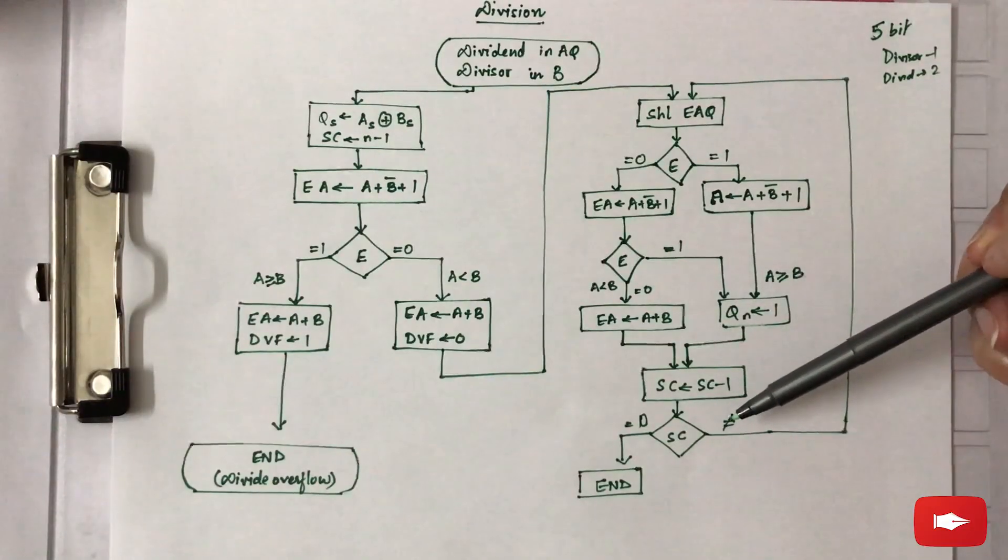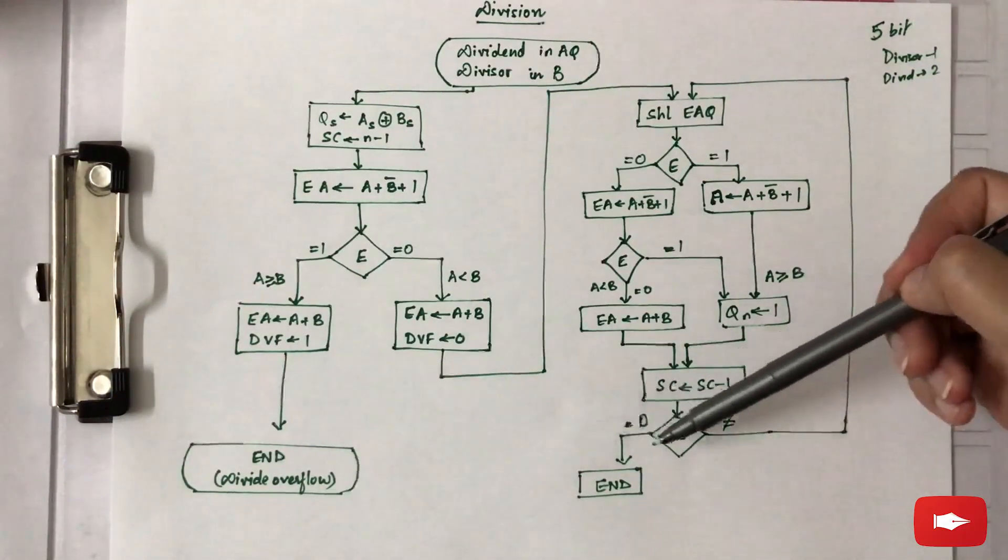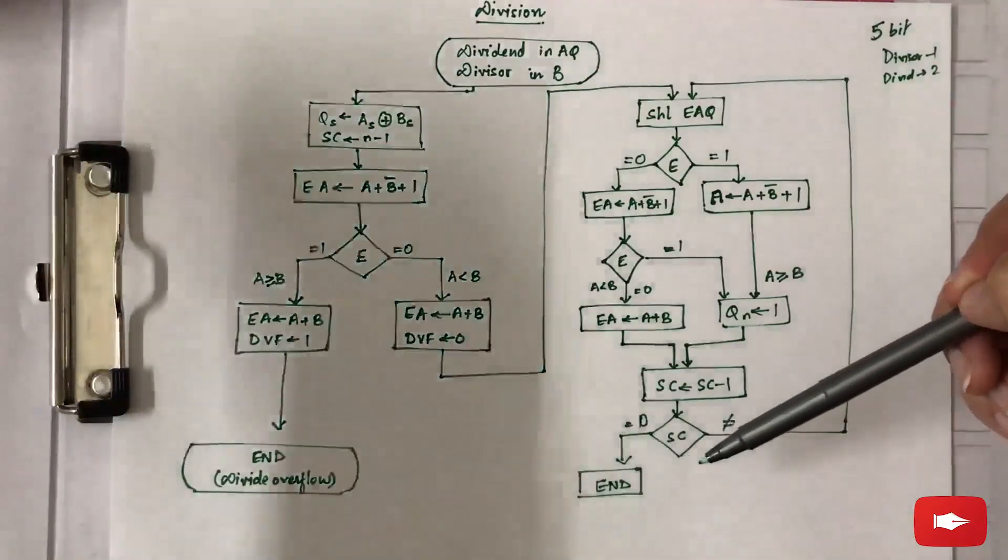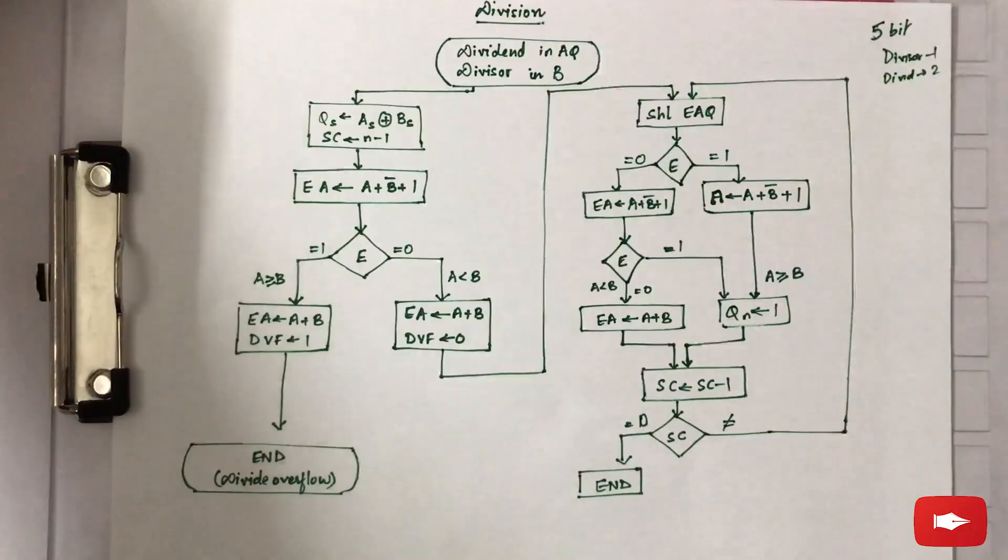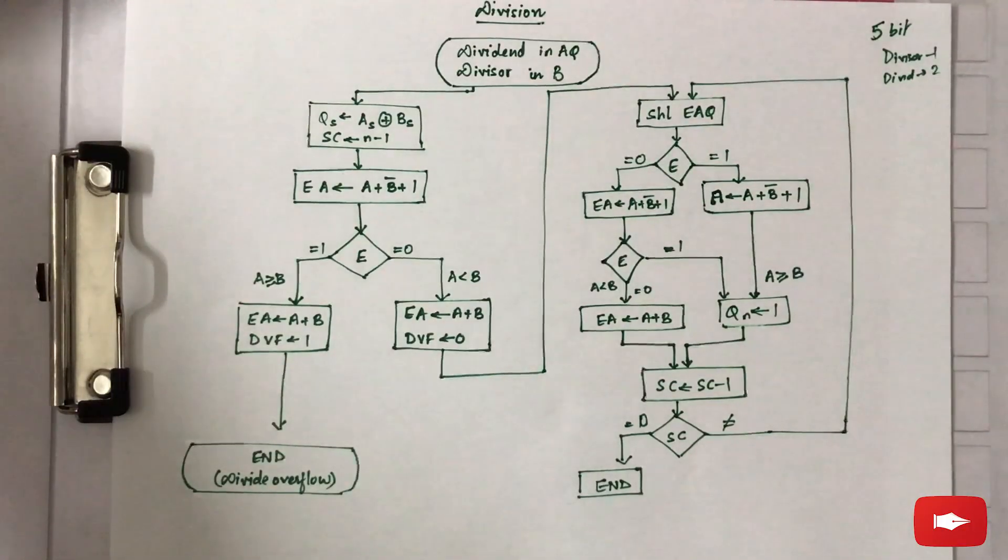These steps are followed until the sequence counter results in zero, and after zero we will get the final quotient and the remainder. This division process is illustrated using an example in the next video. Thank you.